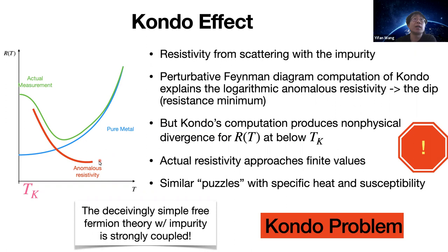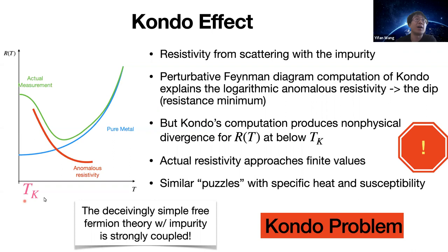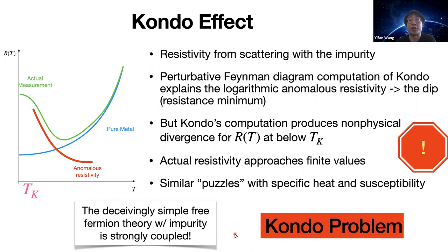Kondo's computation is not perfect. A logarithmic contribution to resistivity will eventually blow up as temperature is lowered, producing a non-physical divergence for temperatures below some low-temperature scale, as opposed to the actual measurement which approaches some finite value. Similar puzzles exist for other observables like specific heat and susceptibility. In other words, this seemingly simple free fermion theory with an impurity is actually strongly coupled, and non-perturbative methods beyond perturbative Feynman diagram computation are needed. This is known as the Kondo problem.